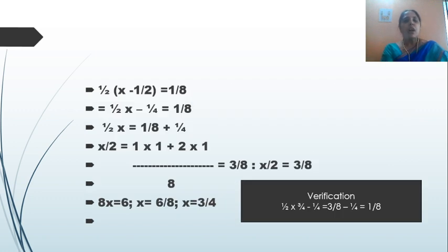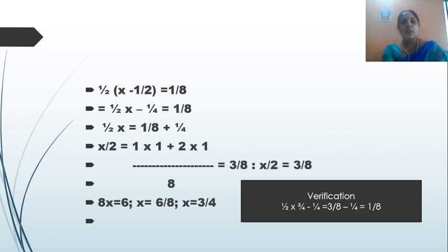So, 1/2 into (x minus 1/2) is equal to 1/8. I am going to remove the brackets and simplify. Half into x gives me x/2, and half into half is 1/4, so the equation becomes x/2 minus 1/4 equals 1/8.